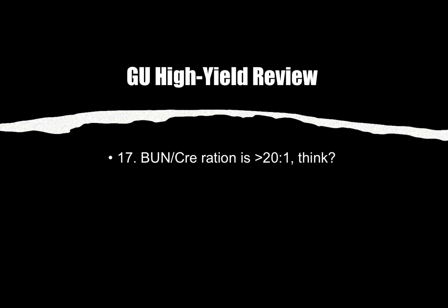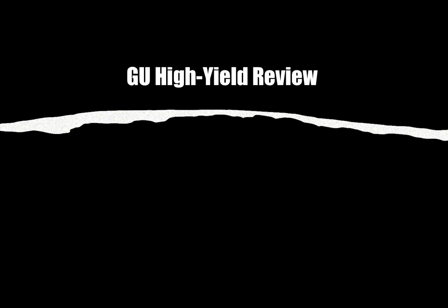Number seventeen: BUN-creatinine ratio greater than 20 to 1 should make you think of a pre-renal issue. So pre-renal equals greater than 20 to 1.